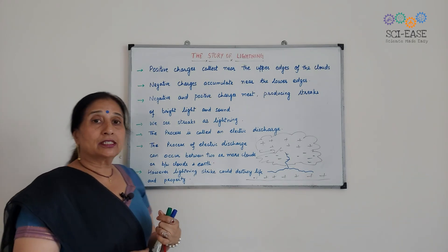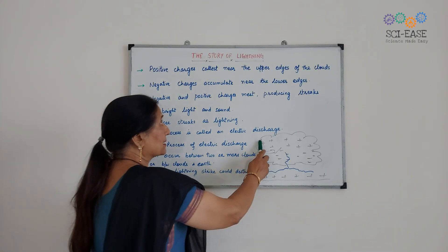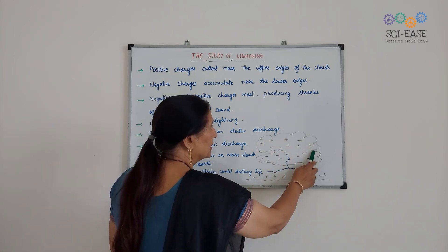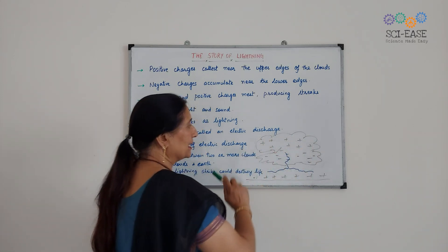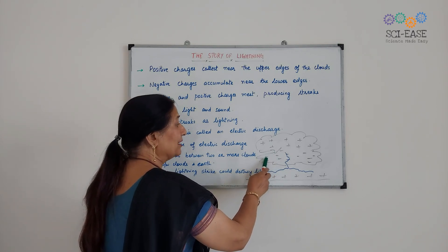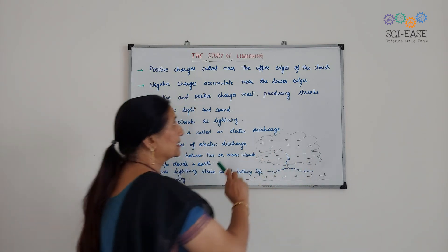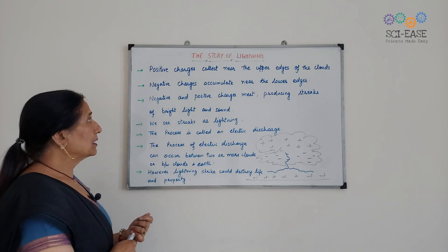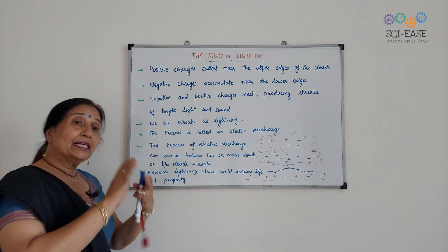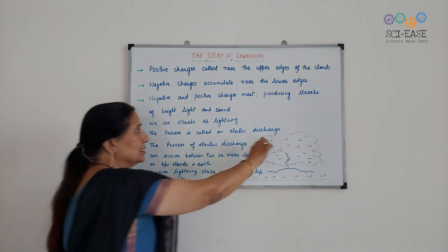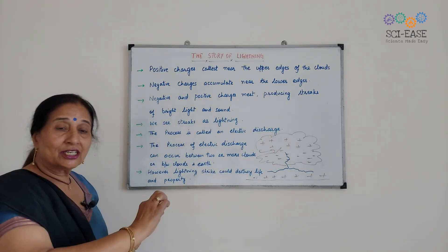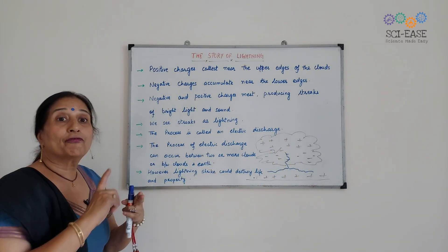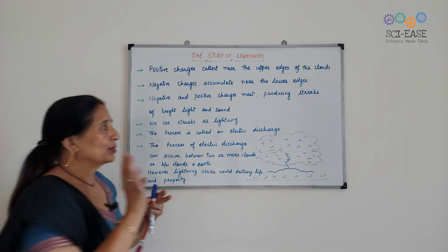Positive charges collect near the upper edges of the cloud — jho upper edges hai vohan peh positive charges collect ho jayenge. And the negative charges, they accumulate near the lower edges of the cloud. Negative and positive charges meet, producing kya banega — streaks of bright light.